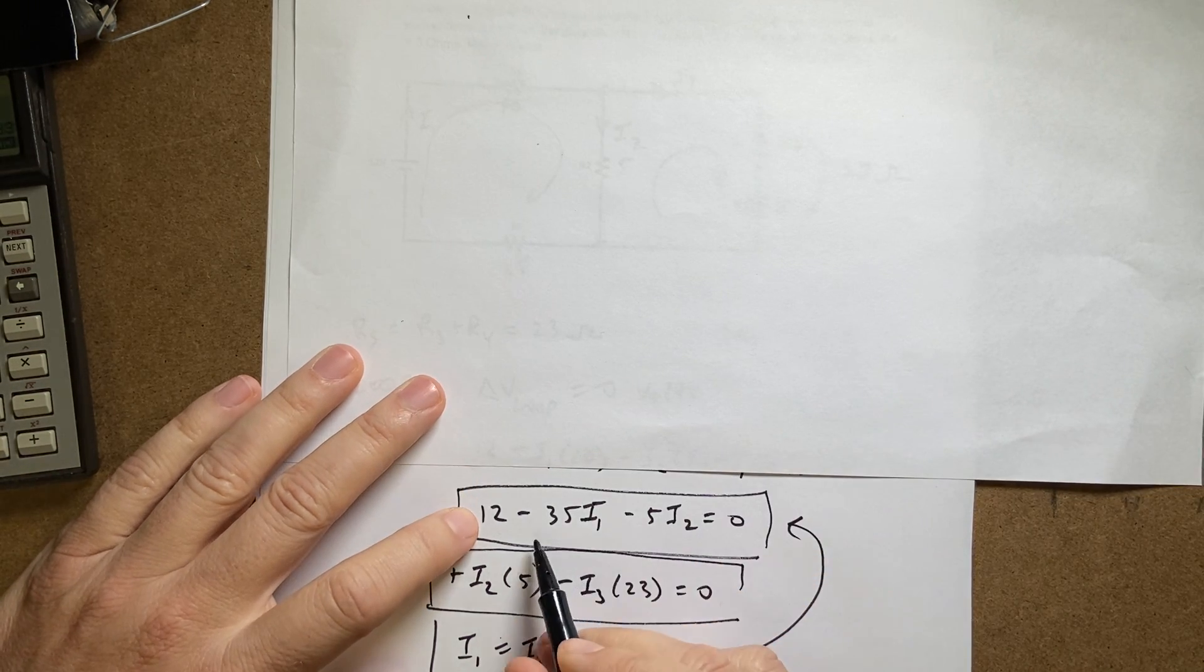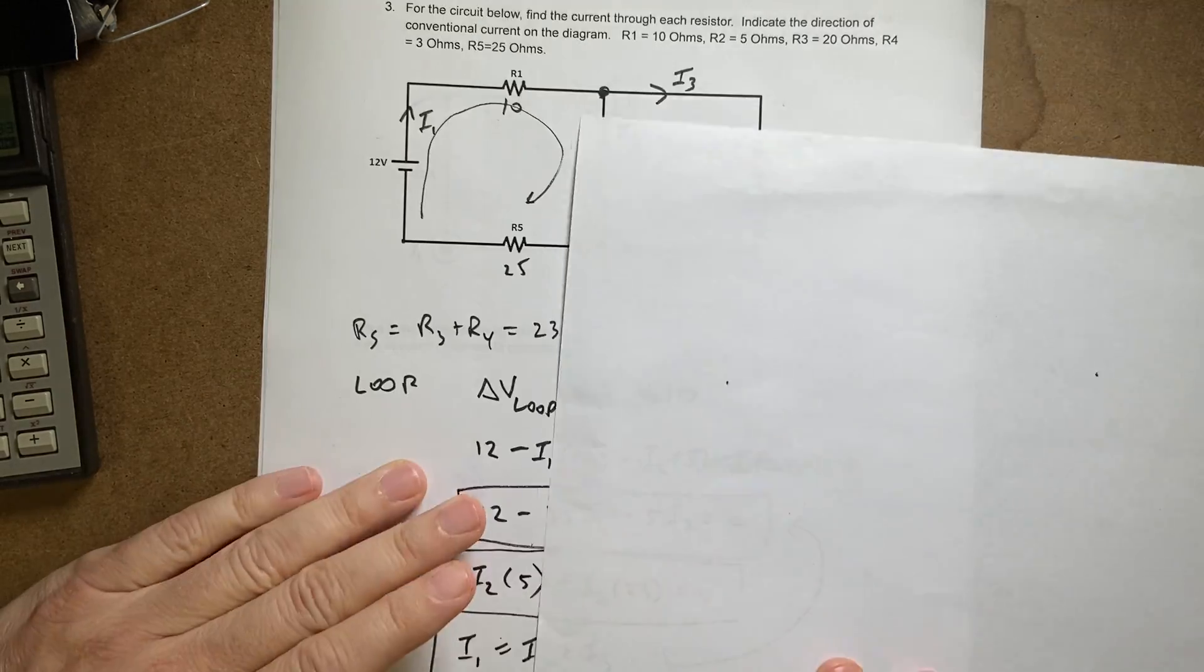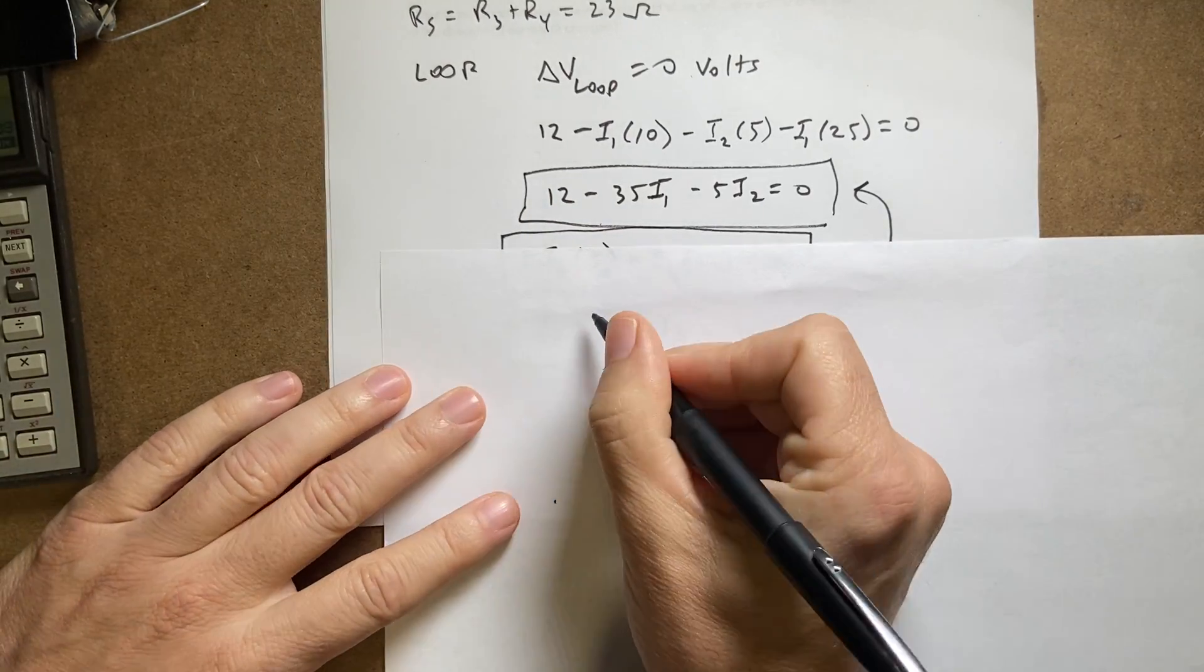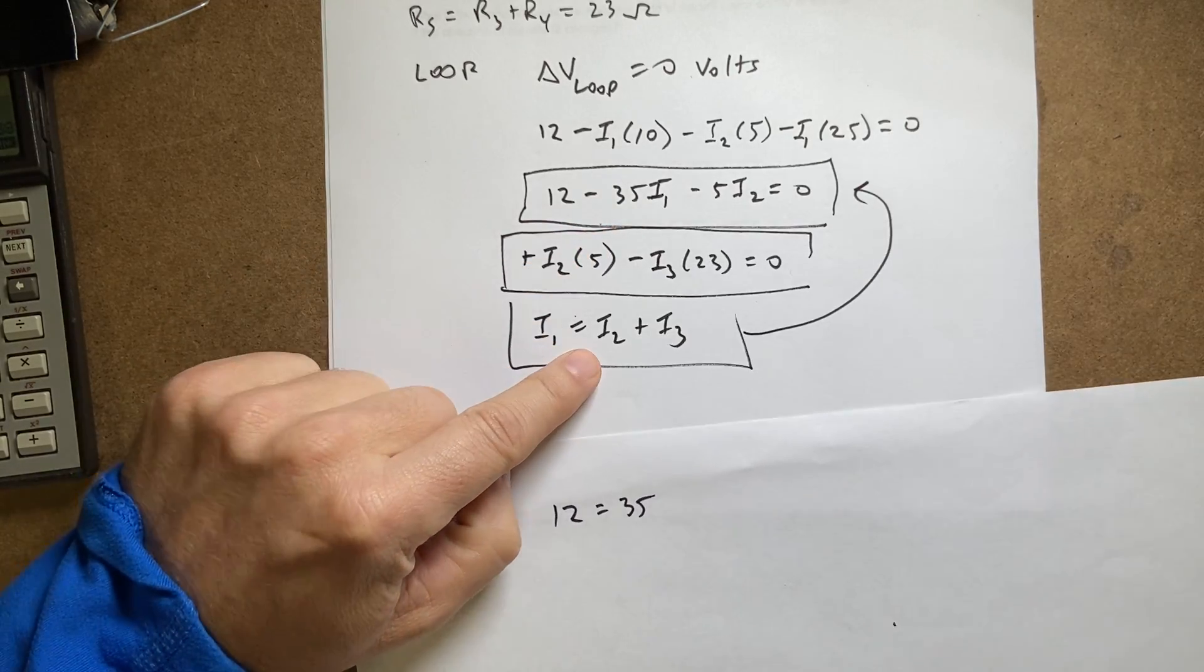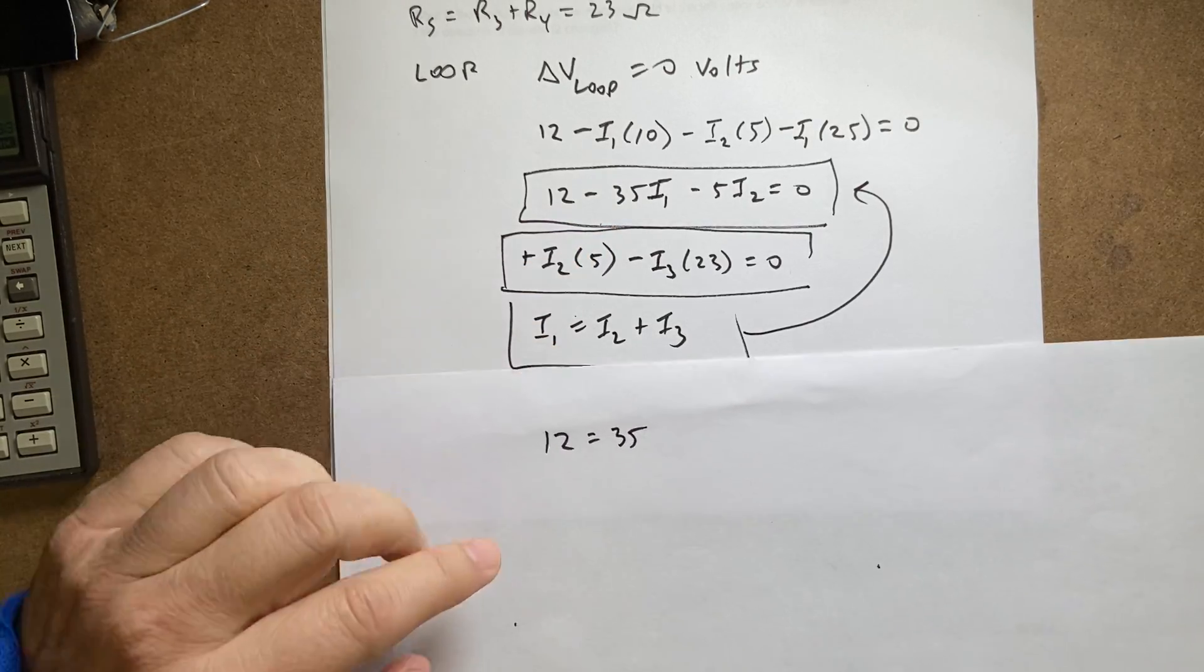Yeah, okay, so I'm going to rewrite this as 12 equals 35 i1, but i1 is this, so it's i2 plus i3.